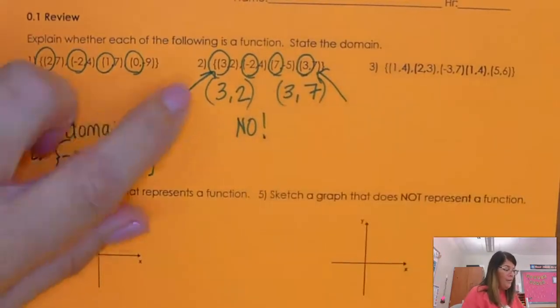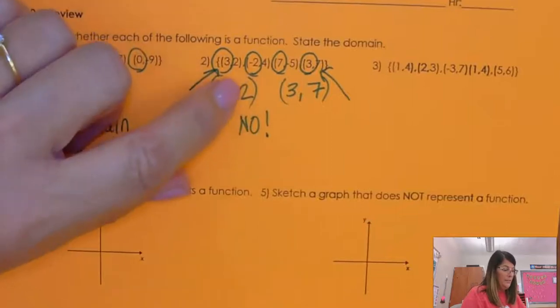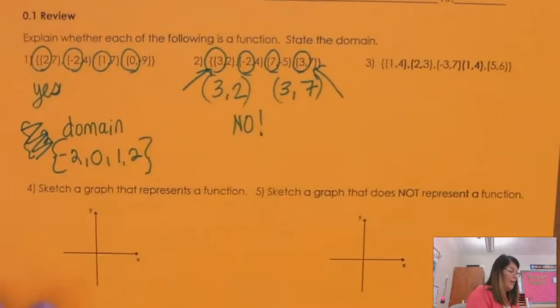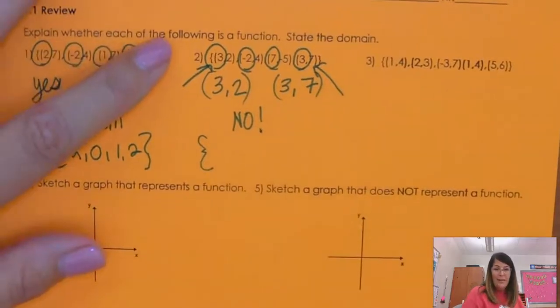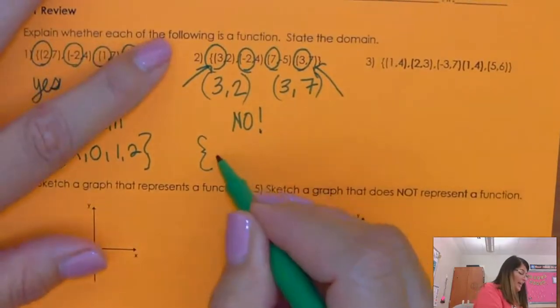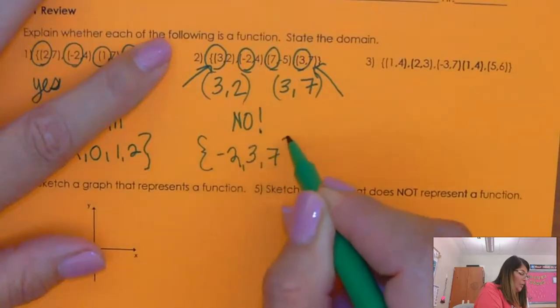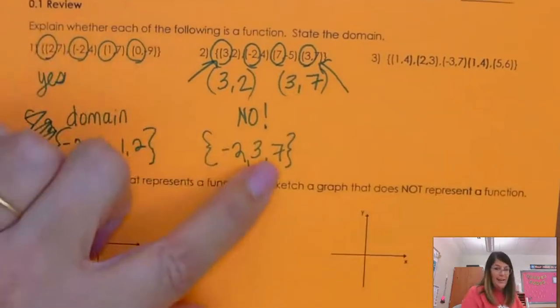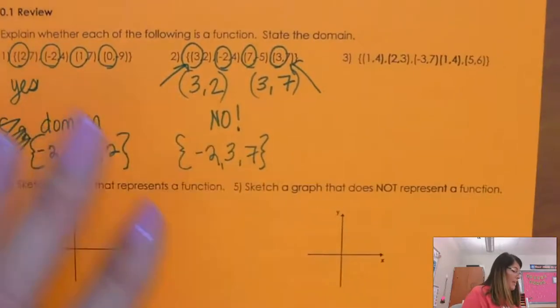Every input, input of 3, does not give me a unique output. Because sometimes it gives me a 2, sometimes it gives me a 7. So it is not a function. Now, if I name the domain. So again, in order and no repeats. So there's only 3 listed here because 3 I don't list it out twice. Okay? All right.